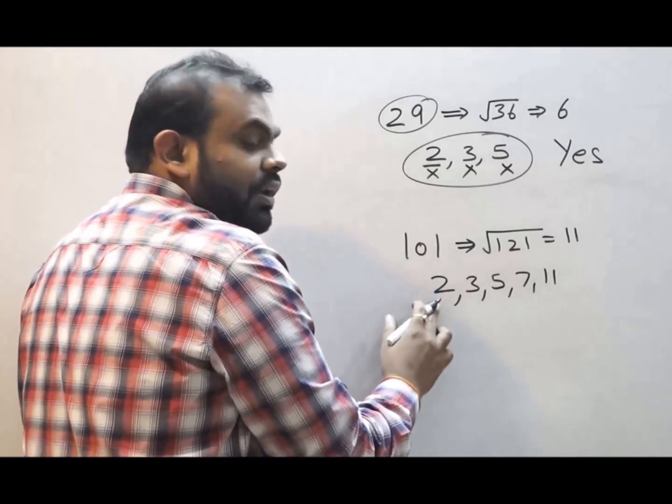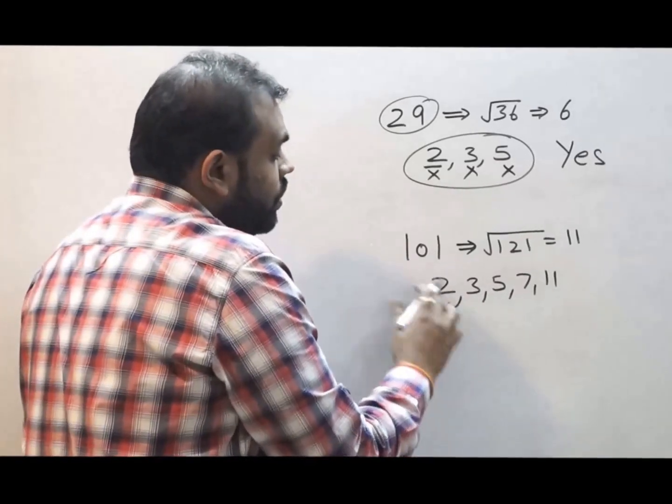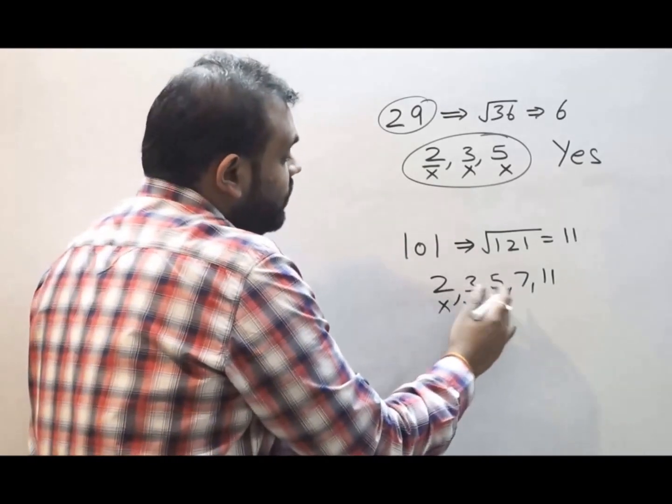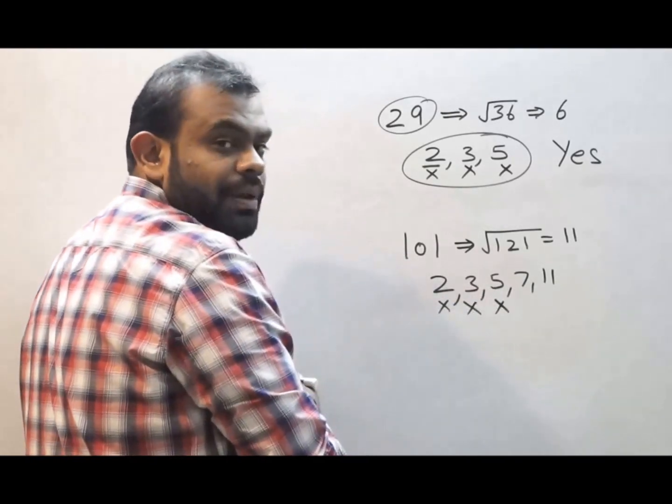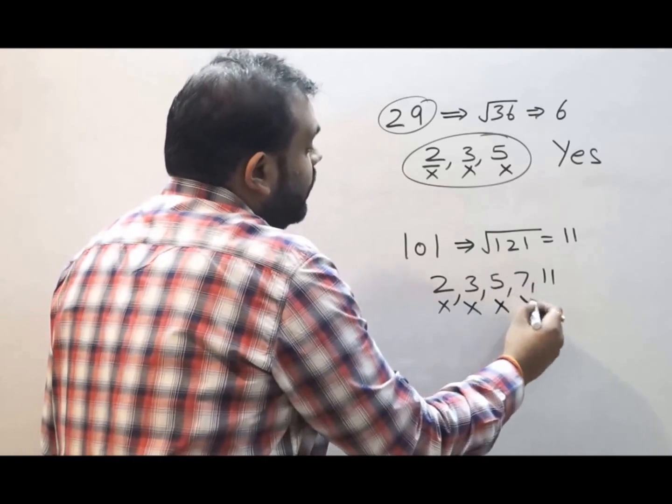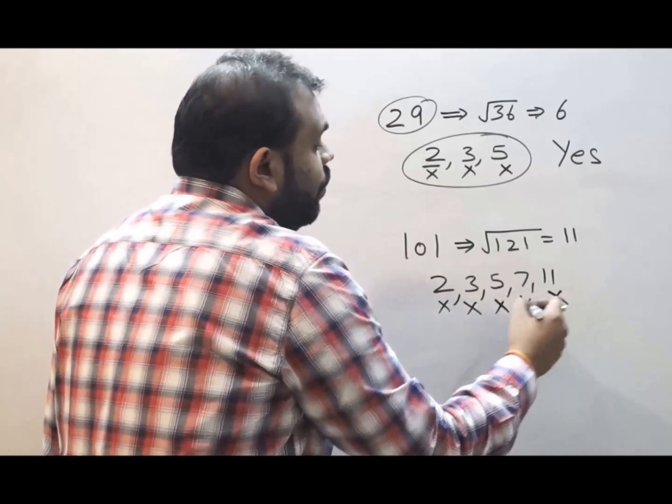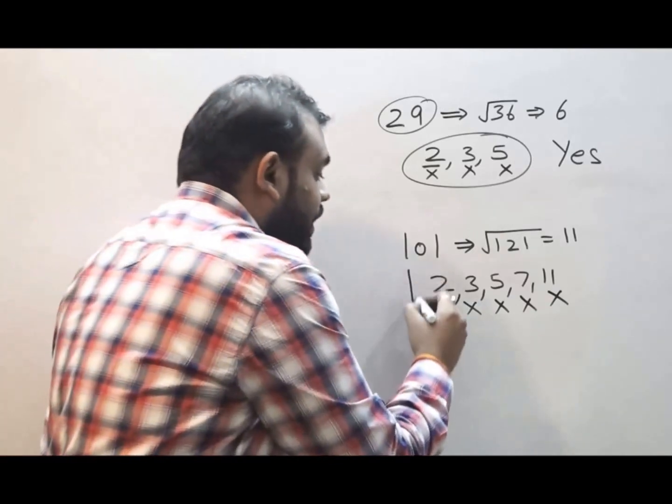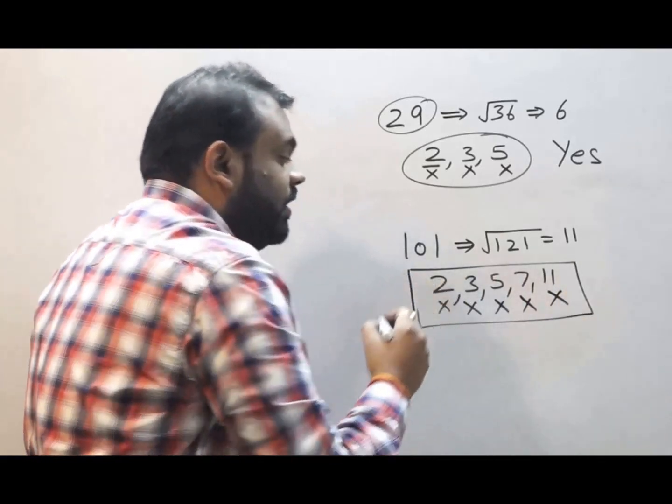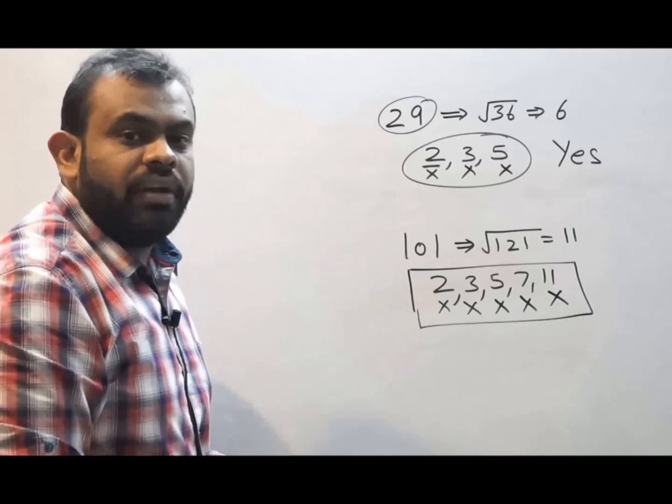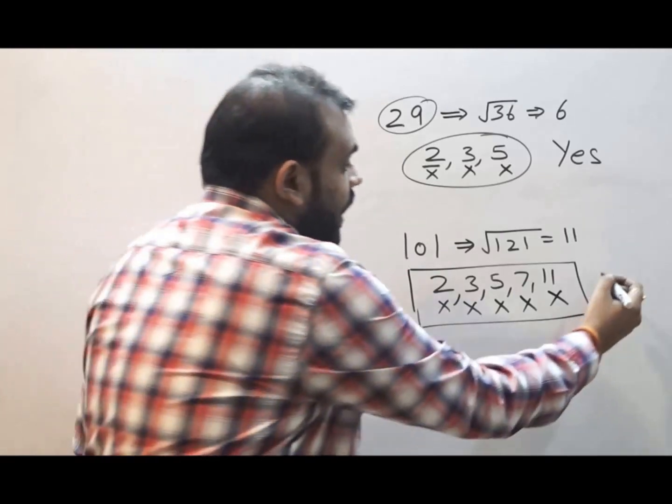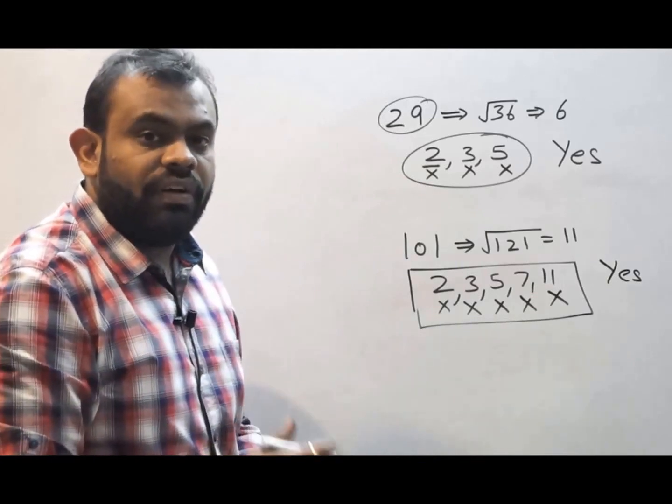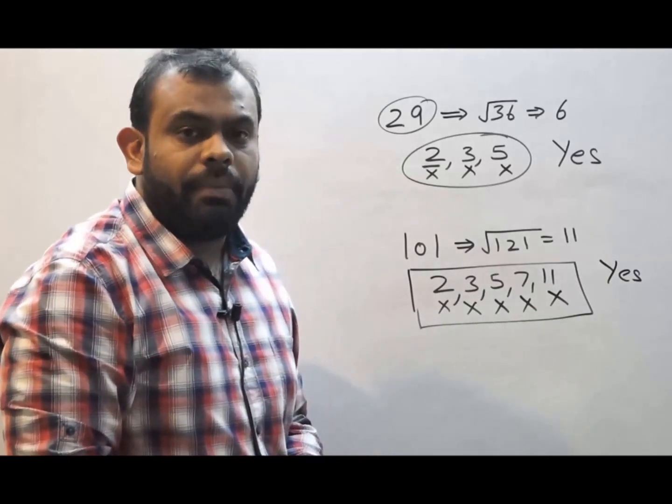Now 101 is not divisible by 2. 101 is not divisible by 3. 101 is not divisible by 5. 101 is not divisible by 7. And 101 is neither divisible by 11. When all the numbers have rejected that 101 cannot be divided by them we can say that yes, 101 is a prime number.